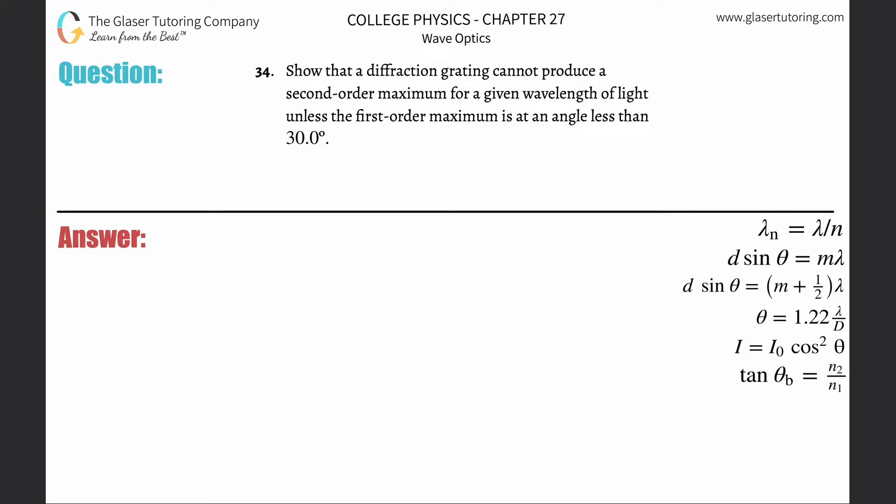Number 34: show that a diffraction grating cannot produce a second order maximum for a given wavelength of light unless the first order max is at an angle less than 30 degrees.